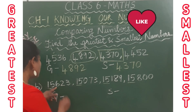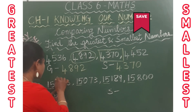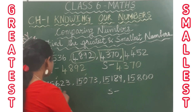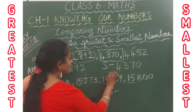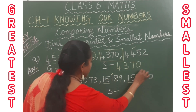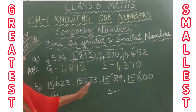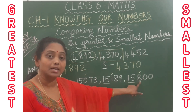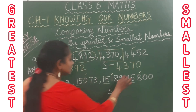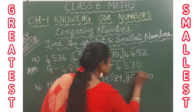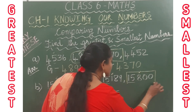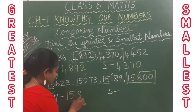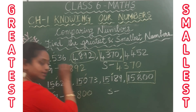At the hundreds place, the digits are: 6, 0, 1, 8. The largest digit here is 8. So 15,800 is the greatest number.